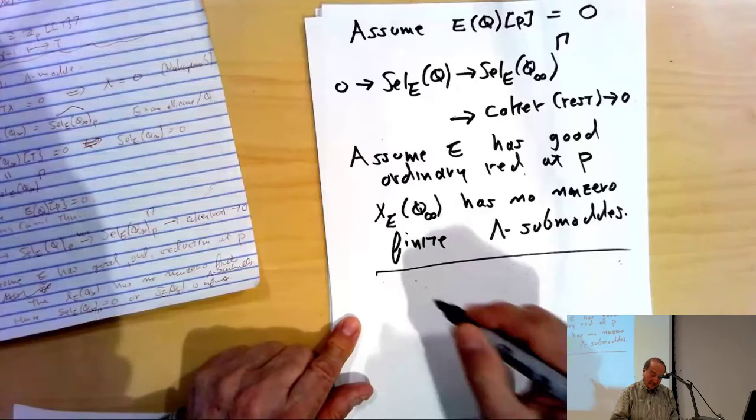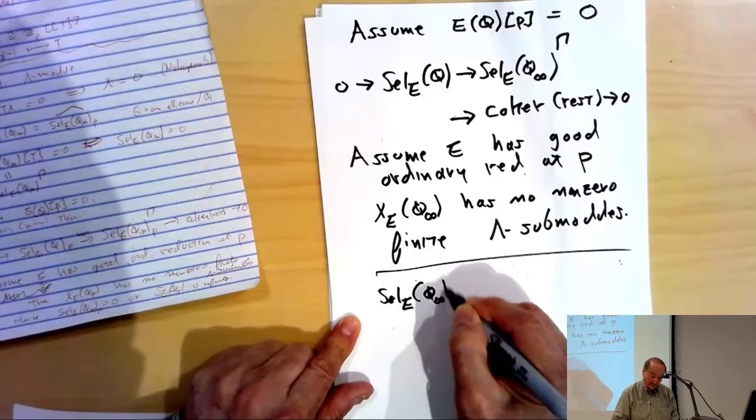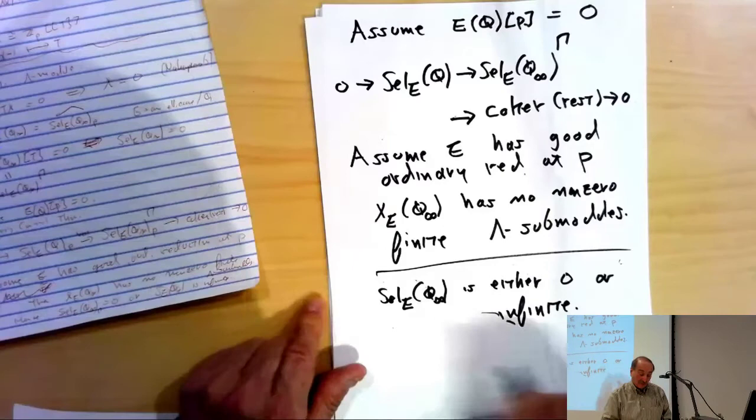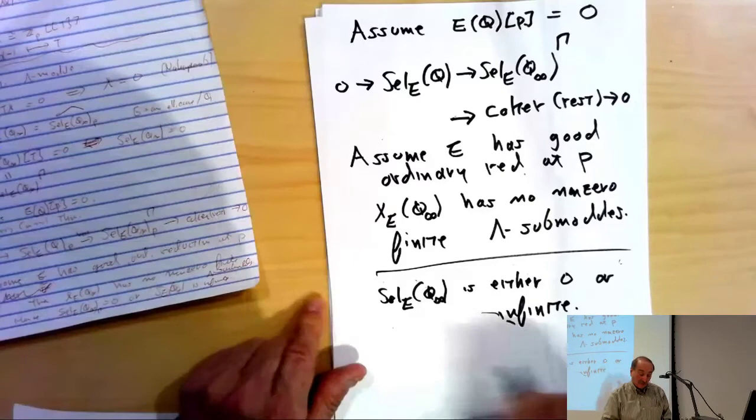So the statement becomes: the Selmer group for E over Q∞ is either zero or infinite, because the Pontryagin dual could very well be zero, but it cannot be finite.